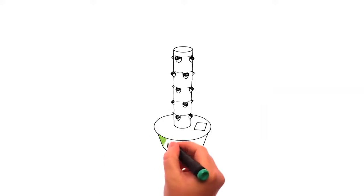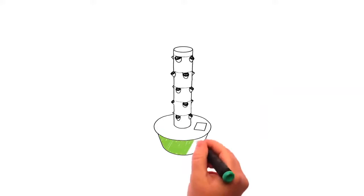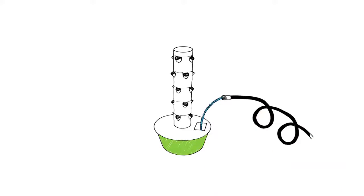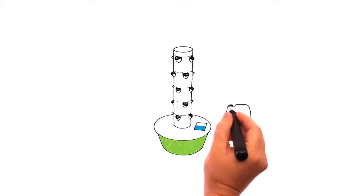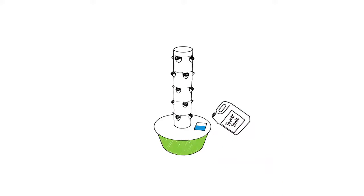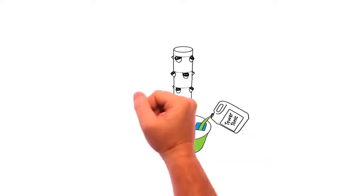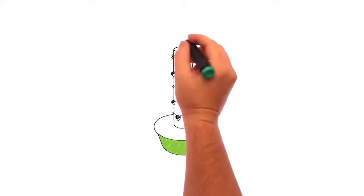Tower Garden has a 20-gallon reservoir at its base that stores the Tower Tonic Nutrient Solution. Developed by experts in plant and human nutrition, Tower Tonic Mineral Blend enables superior plant growth and better nutrition from your Tower Garden produce.